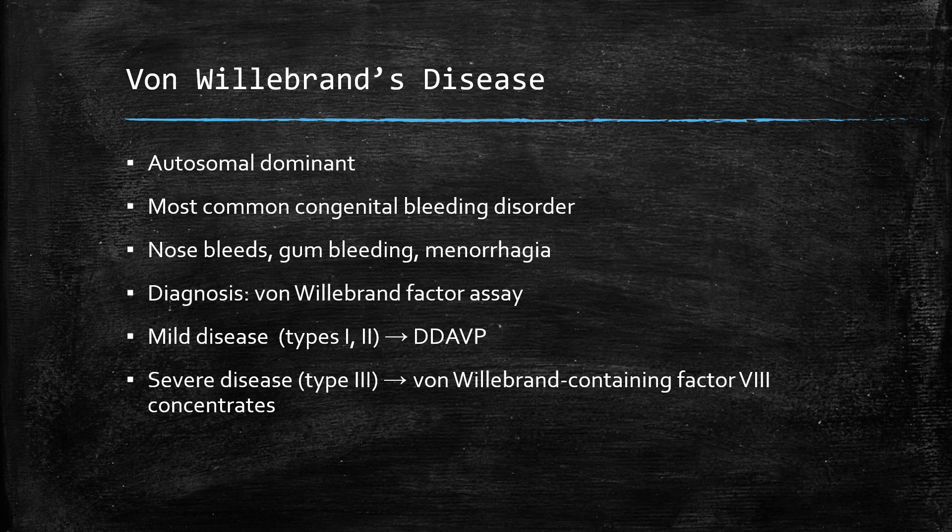Von Willebrand's disease is the most common congenital bleeding disorder and is transmitted in an autosomal dominant fashion. Clinically, it presents with frequent nosebleeds or gum bleeding, or may be diagnosed in the teen years with menorrhagia. The diagnosis is by a von Willebrand factor assay. Patients with mild disease — types one and two — will just require DDAVP before the procedure. Patients with the more severe variant, type three disease, will require von Willebrand-containing factor VIII concentrates.